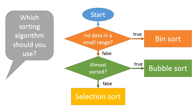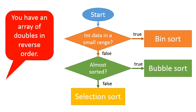One of the other things we need to be aware of is which sorting algorithm should we use, and you should ask yourself these two questions in this order. If you have integer data falling in a small range, you should use bin sort because bin sort is so fast, it's order N. If you don't have integer data falling in a small range, however, but it is almost sorted, then you should use bubble sort because bubble sort is close to order N. But if you don't have either of those things, then bubble sort is slow as molasses, so you should use selection sort.